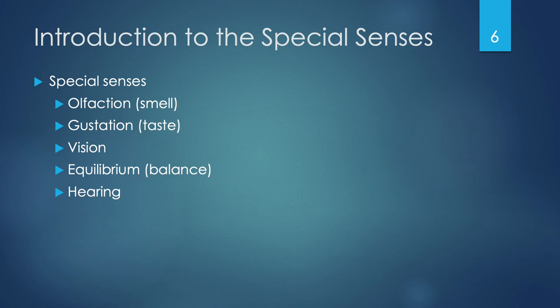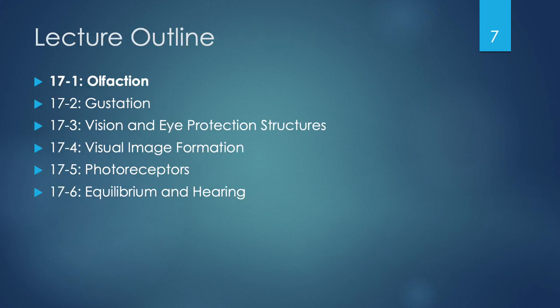So in today's lecture, we're going to be discussing these special senses. This includes the sense of olfaction, which is also known as smell, or gustation, which is the sense of taste. We will discuss vision, and then in our ears, we'll discuss both equilibrium and balance and hearing. Essentially, all of our special senses are located in our heads and nowhere else in our body. We'll go through the textbook in order so you can follow along in your text. We're going to look at olfaction first, then gustation, then vision and eye protection structures, how an image is actually formed, a closer look at photoreceptors, and finally equilibrium and hearing.